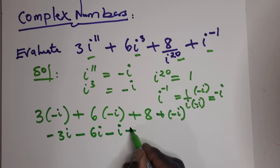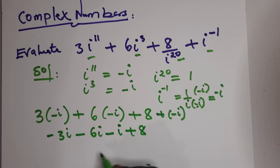You could rearrange the whole thing and you'll get that it will be 8 minus 10i. That's your answer. Thanks for your time.